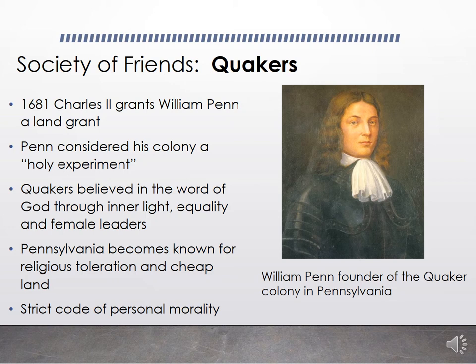Now we'll talk about how Pennsylvania and New Jersey were established. The creation of New York indirectly led to their founding. In 1664, the Duke of York subdivided his grant and gave a portion of land between the Hudson and Delaware Rivers to two friends — this new colony was called New Jersey. William Penn, a prominent English Quaker and son of Admiral Sir William Penn, was brought in to arbitrate a dispute between the two proprietors of New Jersey.